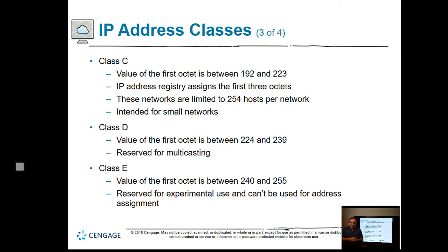Class D is reserved for multicasting — when you send a video stream to many computers all at once. That is a multicast, whereas a unicast is one-to-one computer communication. Class E is reserved for experimental use, so we don't really get access to those.